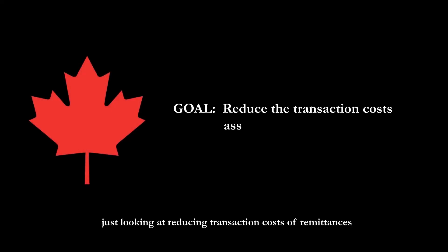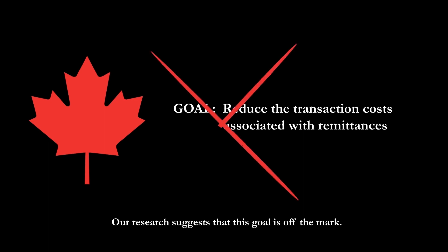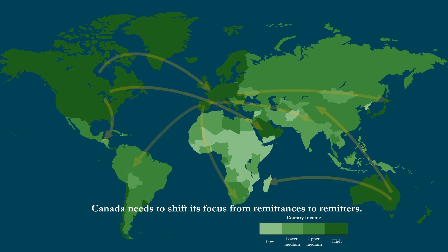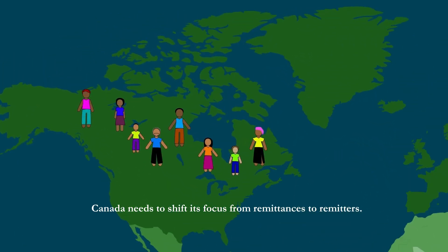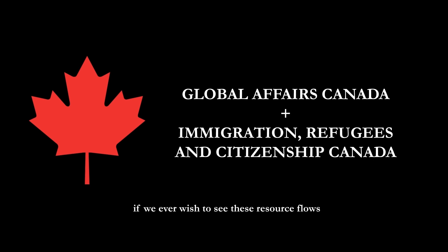The Canadian government is currently just looking at reducing transaction costs of remittances and assuming this will have a strong development impact. Our research suggests that this goal is off the mark. Canada needs to shift its focus from remittances to remitters. Our research shows that development policies around remittances need to come together with migration-related policies if we ever wish to see these resource flows truly make a difference in global development.